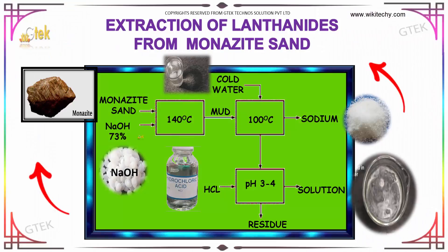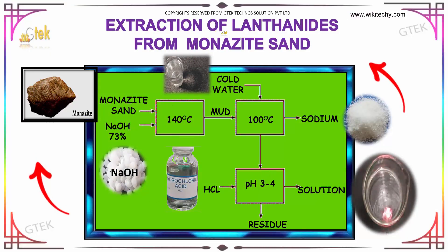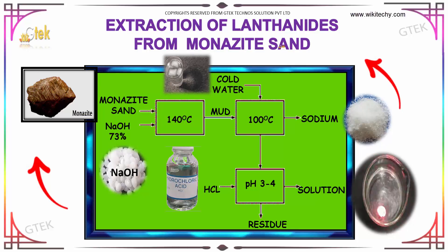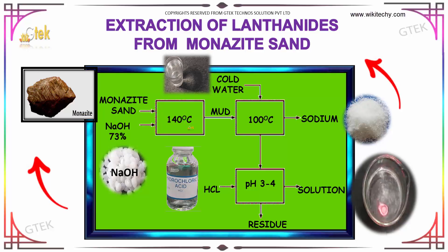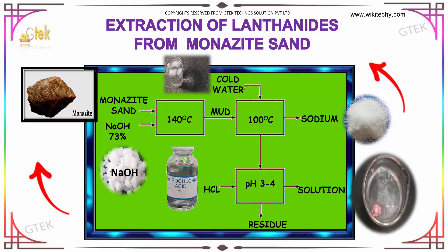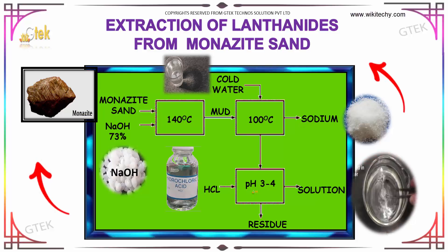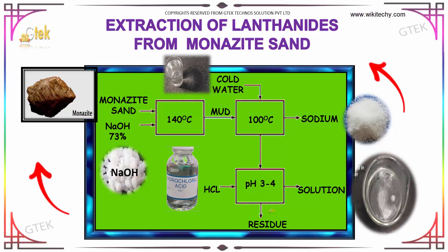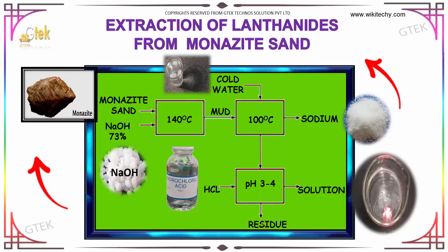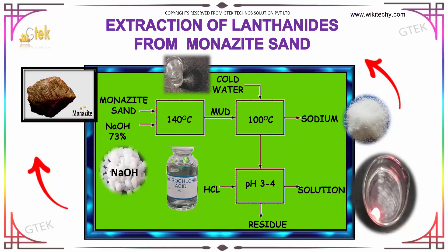Here is a typical example of how the extraction of lanthanides from monazite sand is carried out. The monazite sand is treated with sodium hydroxide at 140 degrees Celsius, followed by cold water treatment and then HCl at pH 3 to 4, yielding the residue. This is how the lanthanides are extracted from monazite sand.